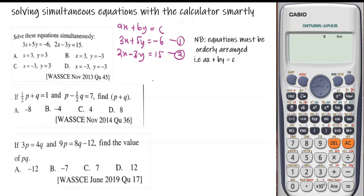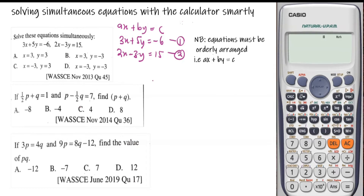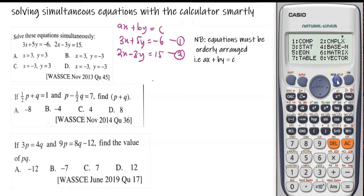Any scientific calculator can be used to program and solve simultaneous equations, but for this recording I'm using the Casio scientific calculator, that is the fx-991ES Plus. In order to program, you press the Mode button.